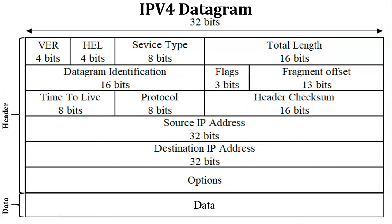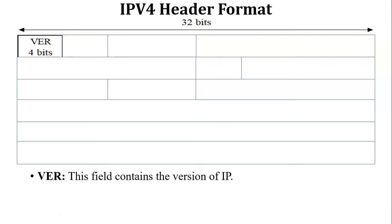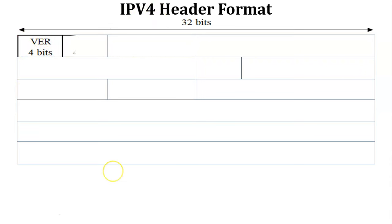Let us start with the first field of the header: Version. Version contains four bits of data. There are two different versions of Internet Protocol used in the network — one is IPv4 and the second is IPv6. Here we are discussing IPv4, so version 4 is stored in this field.